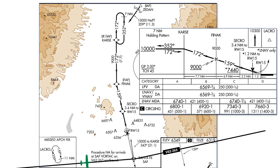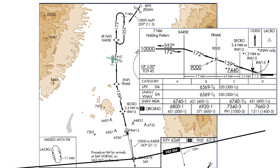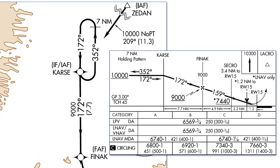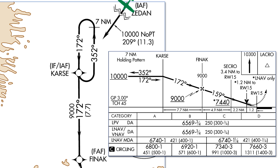In order to do the approach, we'll either need radar vectors or to be sent up to one of the initial approach fixes like Karst, but there's no need to request that — ATC will assign us the proper transition. Now let's say we're approaching from Zidane, the other initial approach fix.